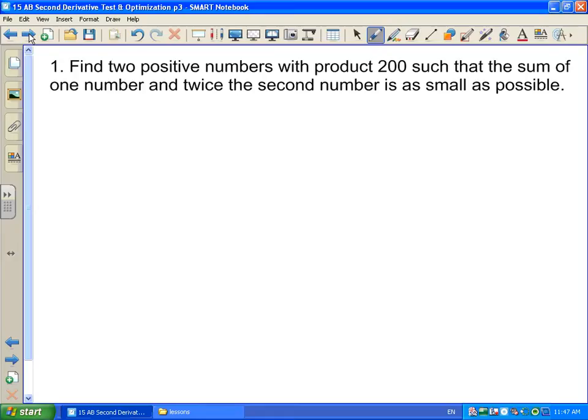The first thing I like to do in questions like this is ask myself, what are we trying to optimize here? What are we trying to make as big as possible or as small as possible? And the thing that we're trying to optimize here is the sum of one number and twice the second. We want to make it as small as possible.